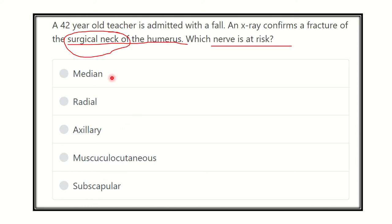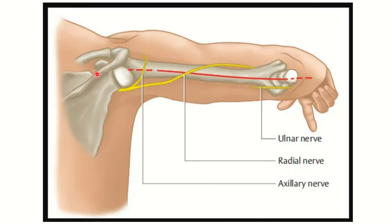Here we can see this is the scapula and here is the humerus — upper end, lower end, and shaft. This line here is the surgical neck. We can see in this area the surgical neck and anatomical neck. There are different parts here — first the surgical neck of the humerus, and at this part, the nerve is the axillary nerve. So a fracture of the surgical neck of the humerus causes damage or injury to the axillary nerve.